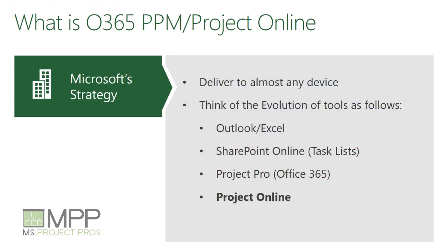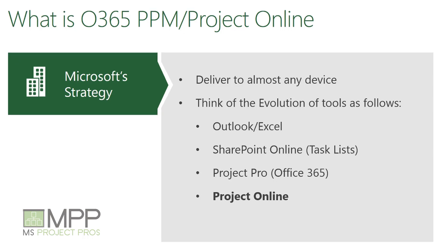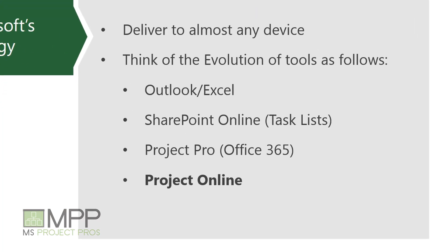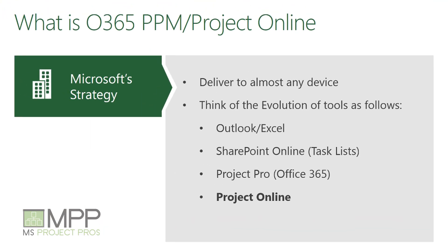Microsoft's strategy with Project Online is part of a series of stepping stones or maturity levels that each organization will go through. Most organizations are familiar with Outlook and Excel for capturing project information and communicating assignments and project status. As your organization grows in maturity, more sophisticated tools and options become available, such as Project Online. The movement from Outlook and Excel through SharePoint Online using task lists and then eventually incorporating Microsoft Project is a natural progression.